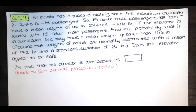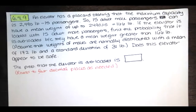In this video, we solve problem 6.4.9 from Essentials of Statistics, 6th edition by Mario Triola. The problem states that an elevator has a placard stating the maximum capacity is 2,490 pounds or 15 passengers. That means 15 adult male passengers can have a mean weight of up to 2490 divided by 15, or 166 pounds each. If the elevator is loaded with 15 male passengers, find the probability that it is overloaded because they have a mean weight greater than 166 pounds. We're told to assume that the weights of males are normally distributed with a mean of 172 pounds and a standard deviation of 31 pounds.